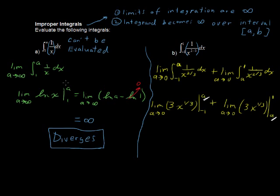Alright, let's move on. Now the limit. So we have the limit as a approaches 0 of 3a to the 1 third, minus 3 times negative 1 to the 1 third. I plugged in this negative 1 also because that's the fundamental theorem of calculus. We have to subtract both of those.